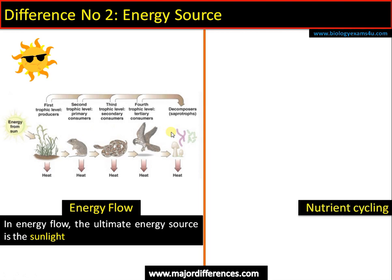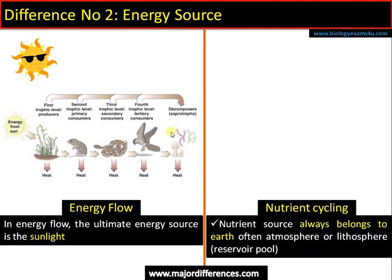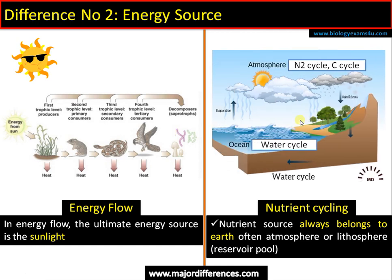Whereas in the case of nutrient cycling, the nutrient source always belongs to the earth — the atmosphere or lithosphere. In cycles like the nitrogen cycle and carbon cycle, the majority of nutrients are locked in the atmosphere. In sedimentary cycles like sulfur and phosphorus, the major nutrient store may be rocks. So nutrients are not from outside — they are actually cycling within the earth.